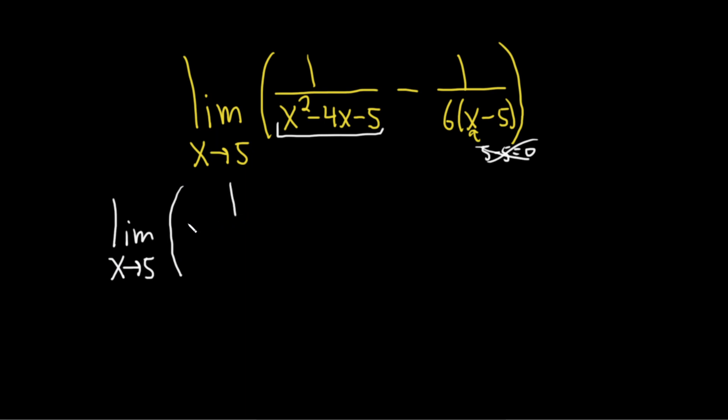Then we have 1 over, and let's just factor by guessing. So this is x times x. We need two numbers that multiply to negative 5 and add to negative 4. So 1 and 5, those multiply to negative 5.